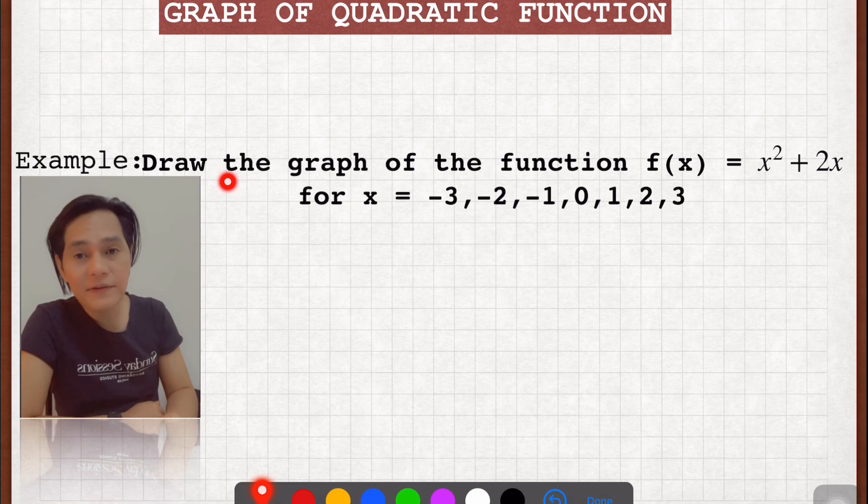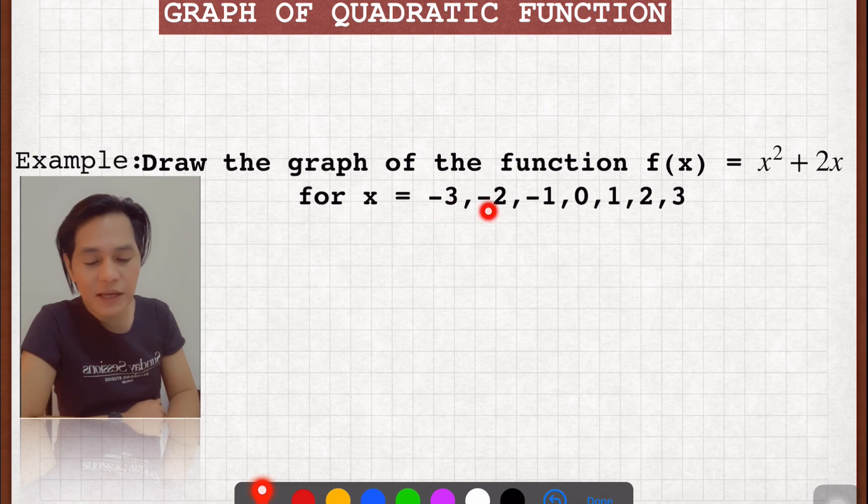I have here an example. Draw the graph of the function f of x is equal to x squared plus 2x, which is a quadratic function, for x is equal to negative 3, negative 2, negative 1, 0, 1, 2, and 3.